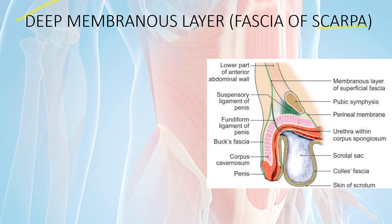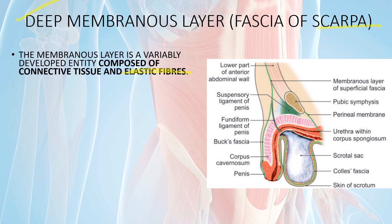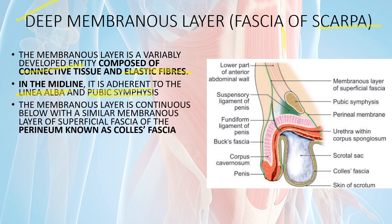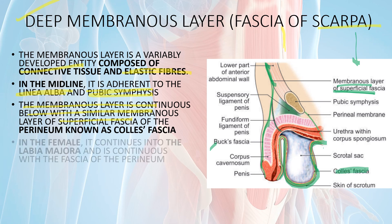The second layer, Scarpa's fascia, is the deep membranous layer. It is composed of elastic fibers and connective tissue. In the midline it is adhered to the linea alba and the pubic symphysis, but the superficial layer does not adhere there. The membranous layer continues onto the penis and forms Buck's fascia. Continuing downward, it covers the scrotum and near the perineum its name becomes Colles' fascia.